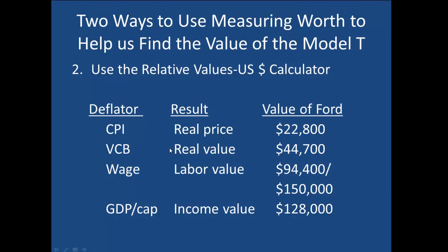Let's talk about the second result, the real value. The real value comes from using the value of the consumer bundle as our deflator. This is a good alternative to the CPI because the CPI measures only inflation for a fixed basket of goods. Thanks to economic growth, we are generally able to consume more over time. The VCB adjusts for both changes in inflation and changes in consumption over time, hence we get something a lot larger — a better reflection of the effect that spending $850 would have had on the average person's budget back then, when people generally consumed much less than they do today.